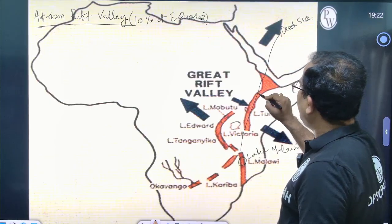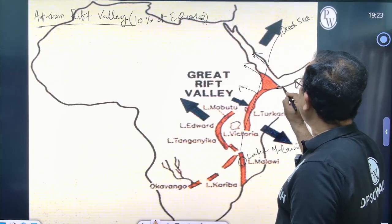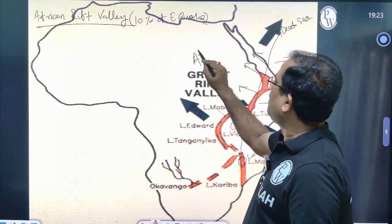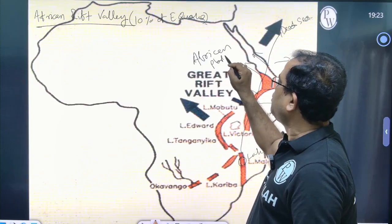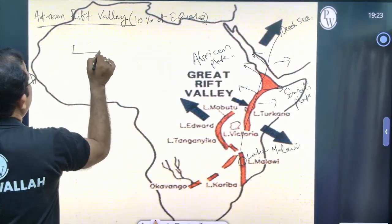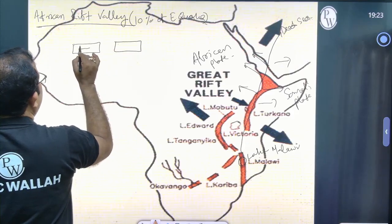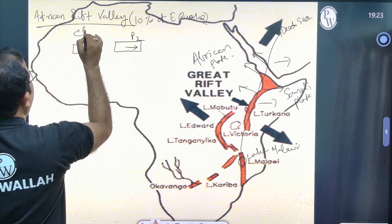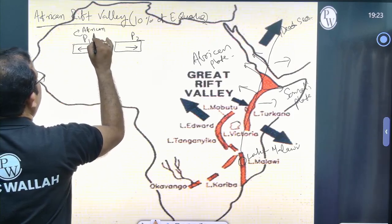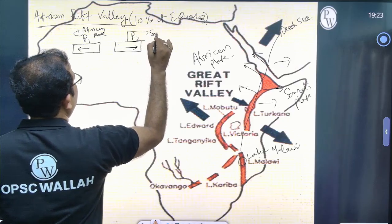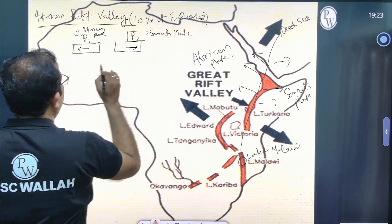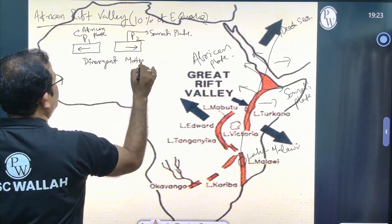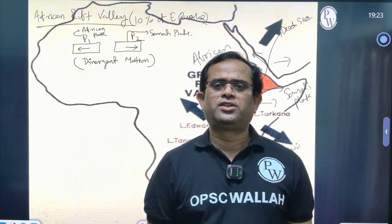In this African Rift Valley, it is believed that the Somali plate is detaching from the African plate. The African plate and the Somali plate are both in divergent motion — they are moving in opposite directions. That is why after a few million years, this part — Somali and Mozambique — will separate.